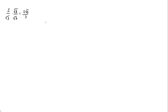It turns out you do the exact same thing with complex and imaginary numbers that you did with radicals. Because the imaginary unit i is a radical, whatever you would do with radicals, you would also do with imaginary numbers. So what if I had 2 over 5i?